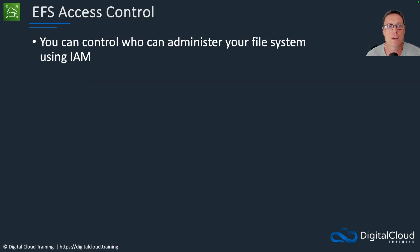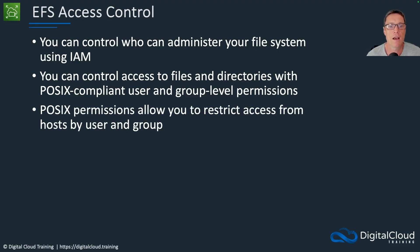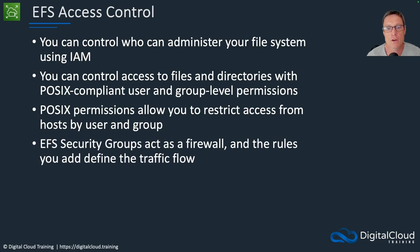For access control on EFS, you can control who can administer the file system using IAM. You can control access to files and directories with POSIX-compliant user and group level permissions, which allow you to restrict access from hosts by user and group. EFS security groups act as the firewall and the rules you add define the traffic flow — you must allow the connection from your EC2 instances to the file system using the NFS protocol.